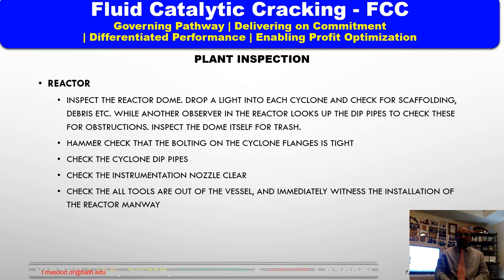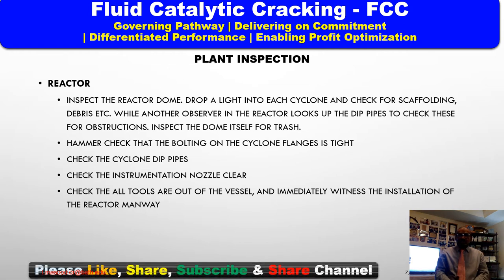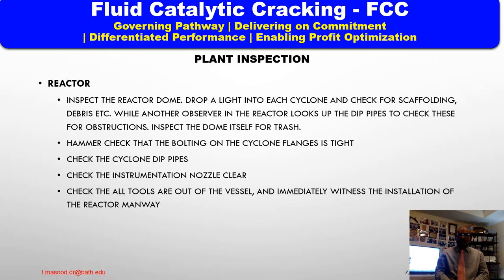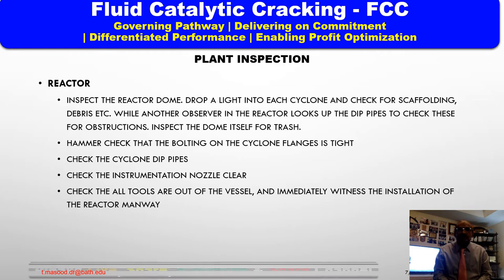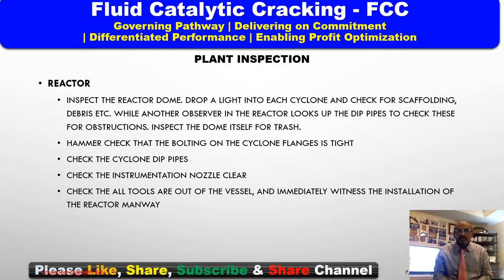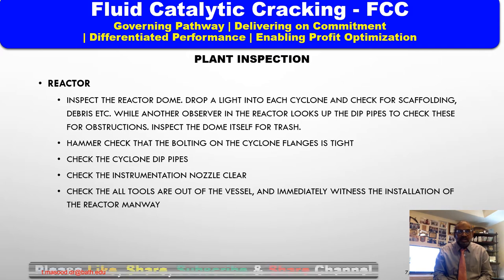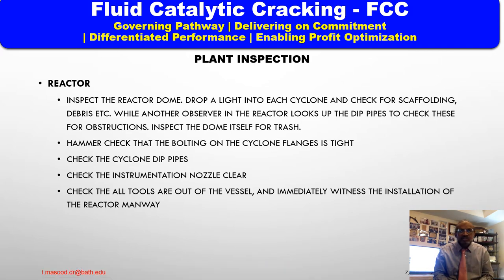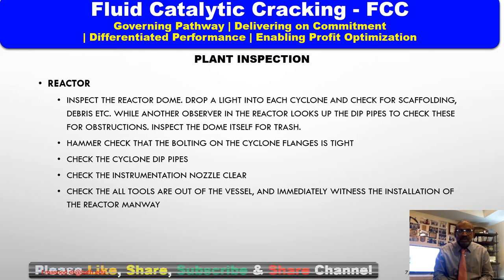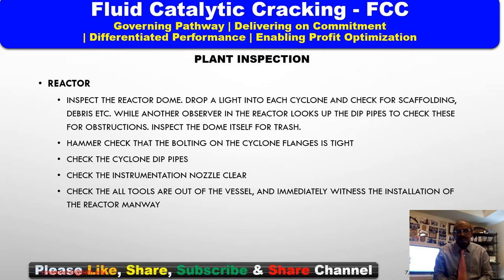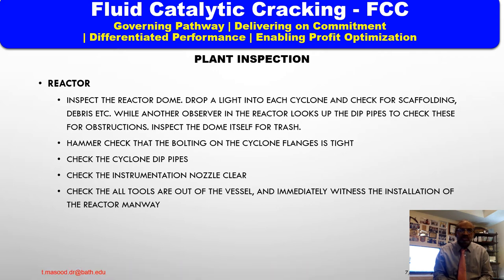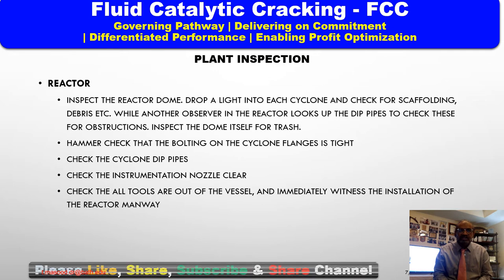Reactor — while scaffolding is still on: number one — inspect the reactor dome; drop a light into each cyclone and check for scaffolding, debris, etc., while another observer in the reactor looks up the dip pipes to check for obstructions; inspect the dome itself for trash and have all tools removed, and immediately witness the installation of the manway. Number two — hammer-check that the bolting on the cyclone flanges is tight. Number three — check the cyclone dip pipes.